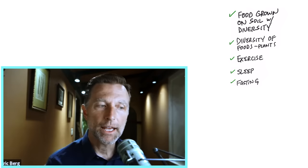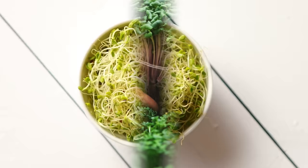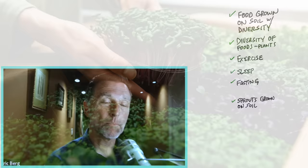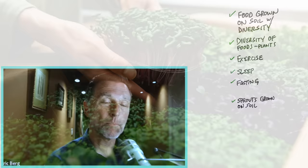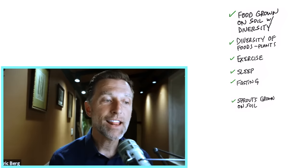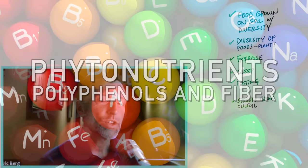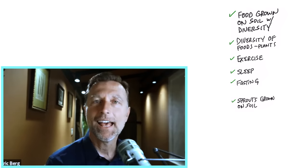A really good way to increase diversity is to consume sprouts or microgreens that are grown on soil — not on coconut fiber, but actual soil. It's a bit hard to find, but you can grow your own. Those microgreens are loaded with not just friendly microbes in the plant itself, but phytonutrients including a lot of polyphenols and fiber that your microbes will really love. You don't need a lot of them because they're so concentrated with these phytonutrients.